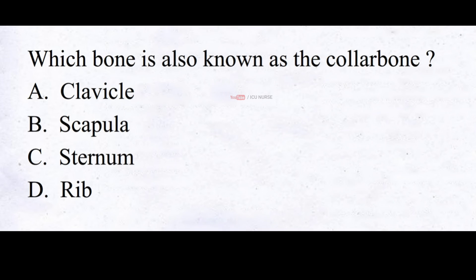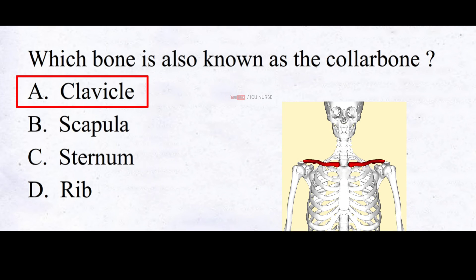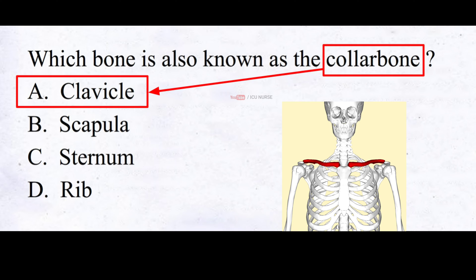Which bone is also known as the collar bone? A. Clavicle, B. Scapula, C. Sternum, D. Rib. And the correct answer is A. Clavicle. The collar bone is also called the clavicle because clavicle is the Latin word for this bone.